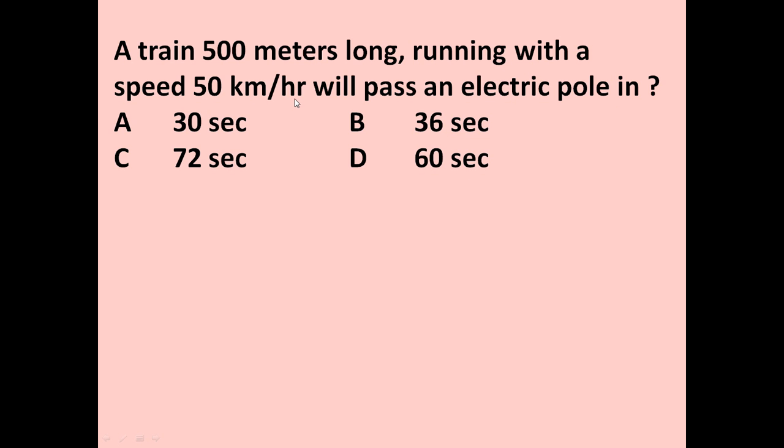So first let us convert this unit km per hour into m per second. So speed of the train is equal to 50 km per hour. Kilometer means 1000 meters.